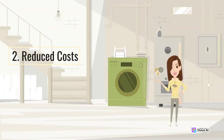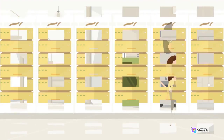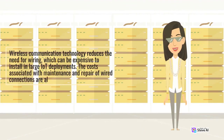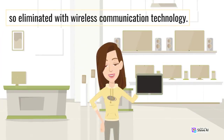2. Reduced costs. Wireless communication technology reduces the need for wiring, which can be expensive to install in large IoT deployments. The costs associated with maintenance and repair of wired connections are also eliminated with wireless communication technology.